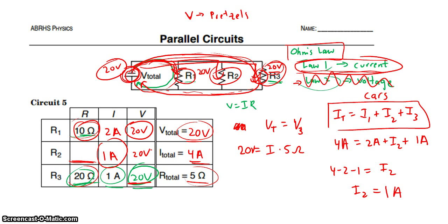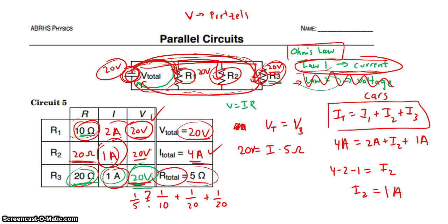Using V equals IR, we can find R2 is 20 ohms. We can do our checks: it's a parallel circuit, so voltages must be equal — correct. And 2 plus 1 plus 1 equals 4 amps total, which is correct since current splits in parallel. You could even verify the total resistance using the parallel resistor formula. Next lesson, you'll work on compound circuits which are even more difficult. But if you apply Ohm's Law and, when stuck, think of your two Kirchhoff's Laws for current and voltage, you'll be able to solve all these problems. Thank you.